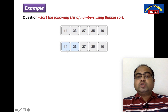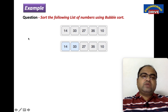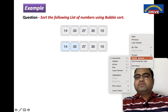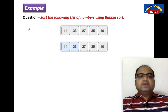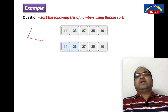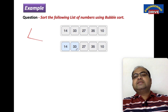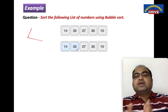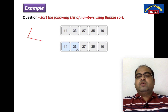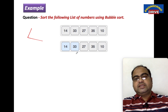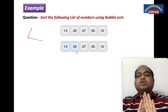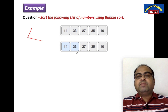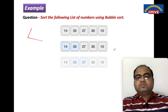I am starting with the first two elements, 14 and 33. I am going to do a less-than comparison: 14 is less than 33 — condition true. Whenever the condition is true, there is no need to swap the numbers, so keep them in their original positions. 14 and 33 are kept as they are.